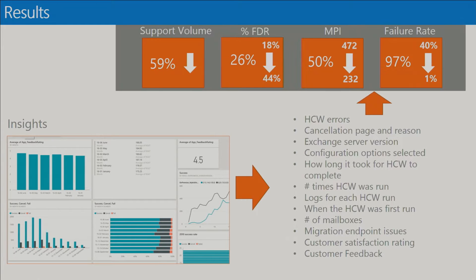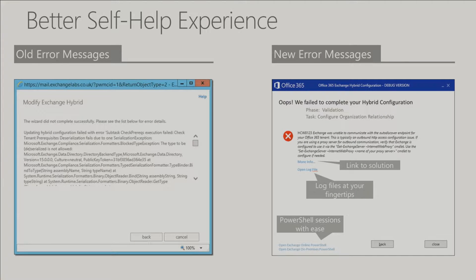We've seen our failure rate go from 40% on first run down to 1%. That's a significant decrease in issues. Now when we fix issues we say 'three people ran into this' rather than '10% of people ran into this' — we're fixing one-off and two-off issues.